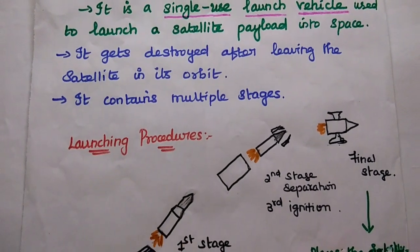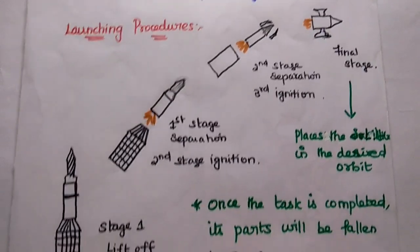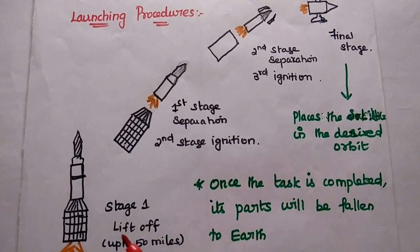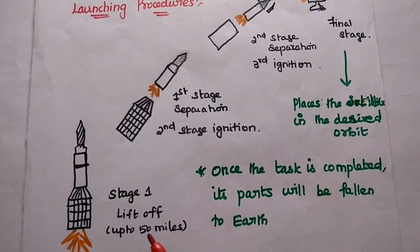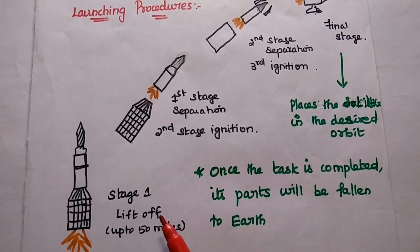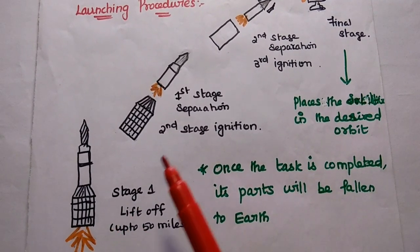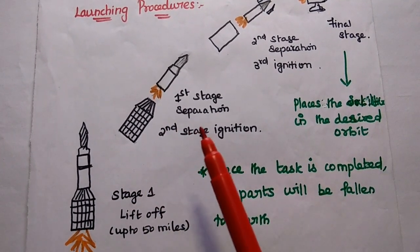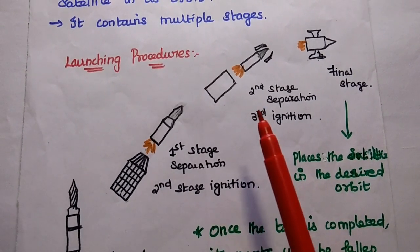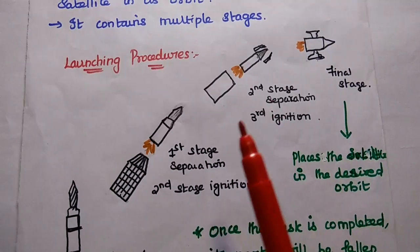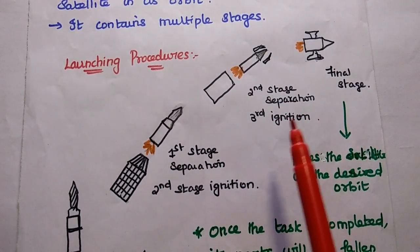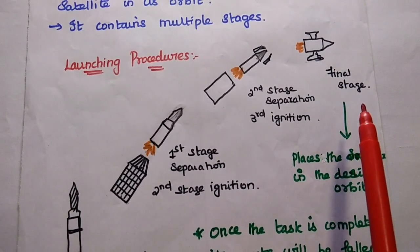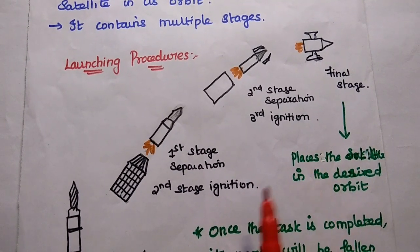The ELV contains multiple stages in its launching process. Here we can consider a three-stage launching procedure. The first stage is the lift-off stage, which takes the satellite up to 50 miles. Once this is done, the first stage is separated from the launch vehicle. Then the second stage ignites, and after completing its task, the second stage is separated from the satellite. Then the third stage ignites to proceed to the particular orbit, and this is the final stage where the satellite is placed in the desired orbit.